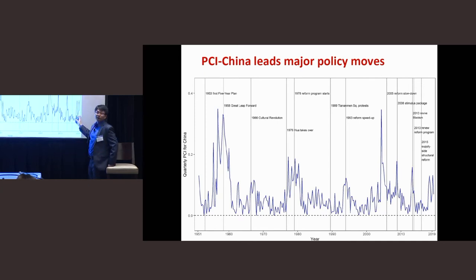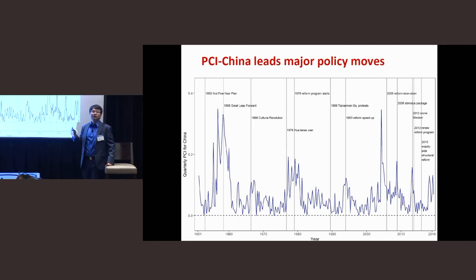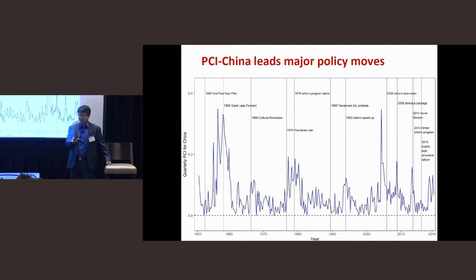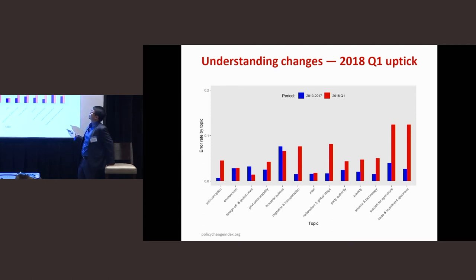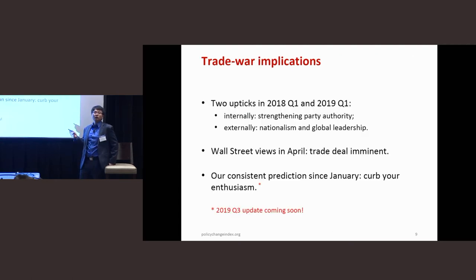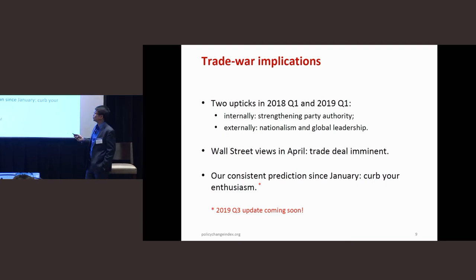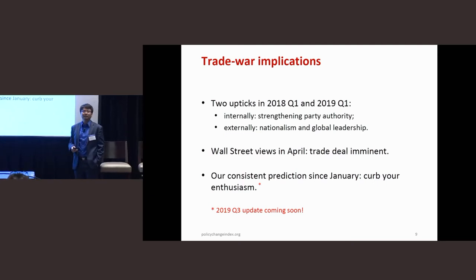Going forward, we don't have the literature to validate yet. We have upticks in Q1 of 2018 and in 2019. You can figure out what's happening by reading the articles that are misclassified, because when an article unexpectedly comes on the front page, you know it's a new topic. Doing the analysis on those first two quarters, China has been taking more and more hardline positions, not only domestically but internationally. This is why since the beginning of the year, Julian and I have been writing that the trade deal is not very likely — even when Wall Street was expecting something to happen in April.